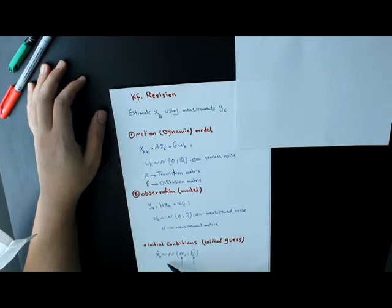As a rule, we model the initial state of the state vector as a Gaussian distribution with mathematical expectation m₀ and covariance matrix P₀.